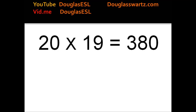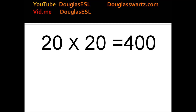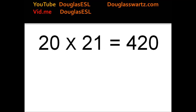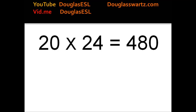20 times 19 equals 380. 20 times 20 equals 400. 20 times 21 equals 420. 20 times 22 equals 440. 20 times 23 equals 460. 20 times 24 equals 480. 20 times 25 equals 500.